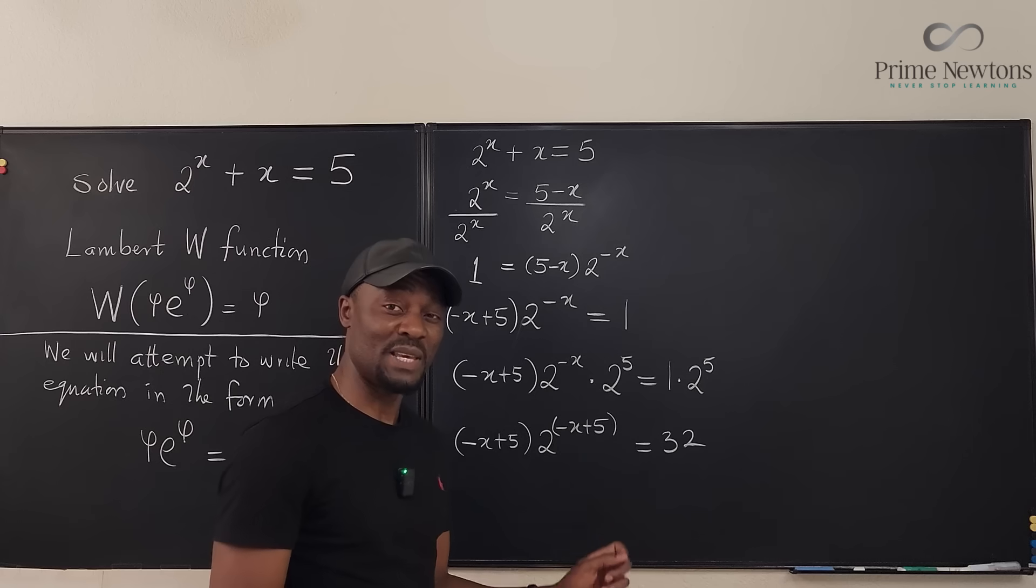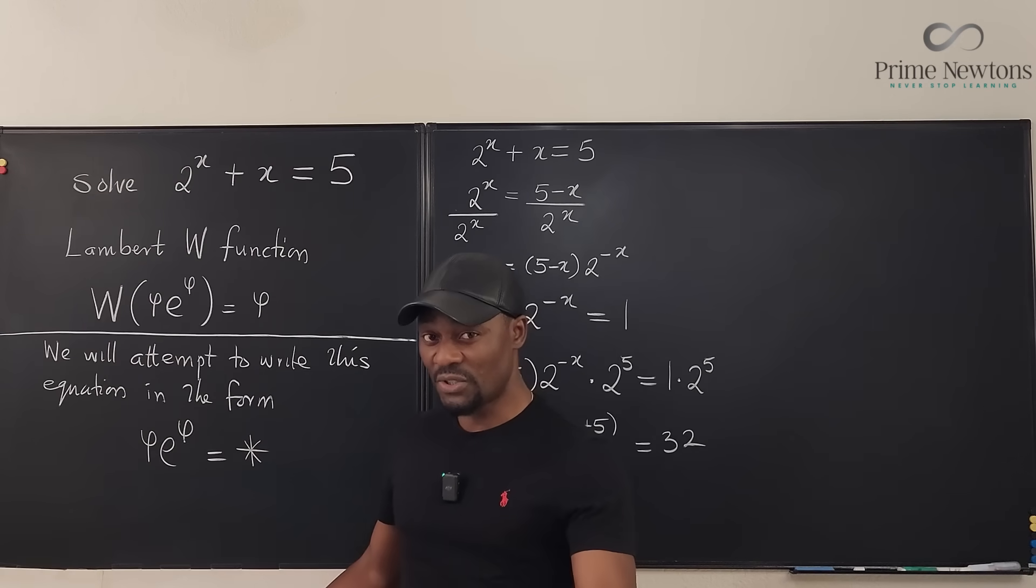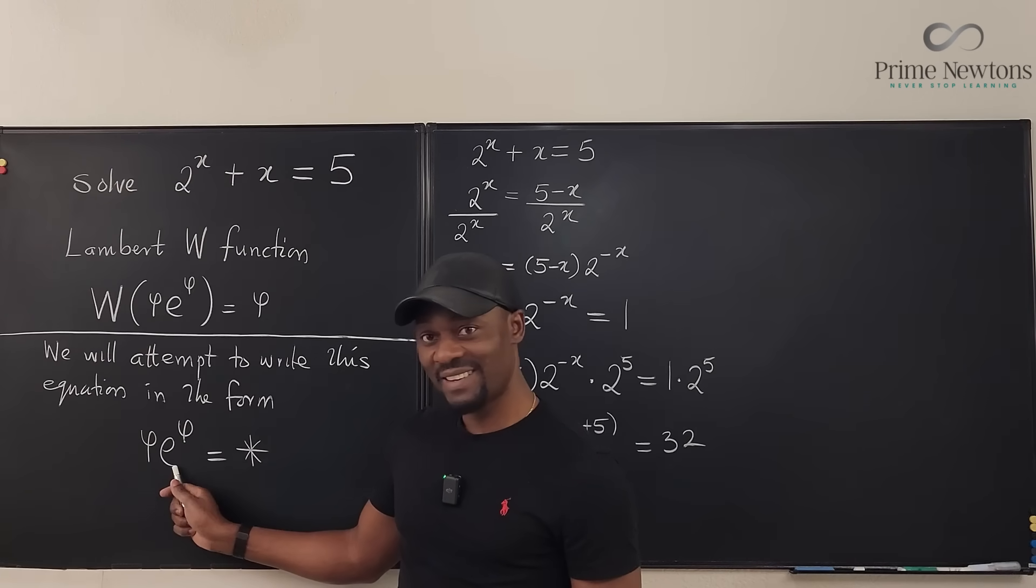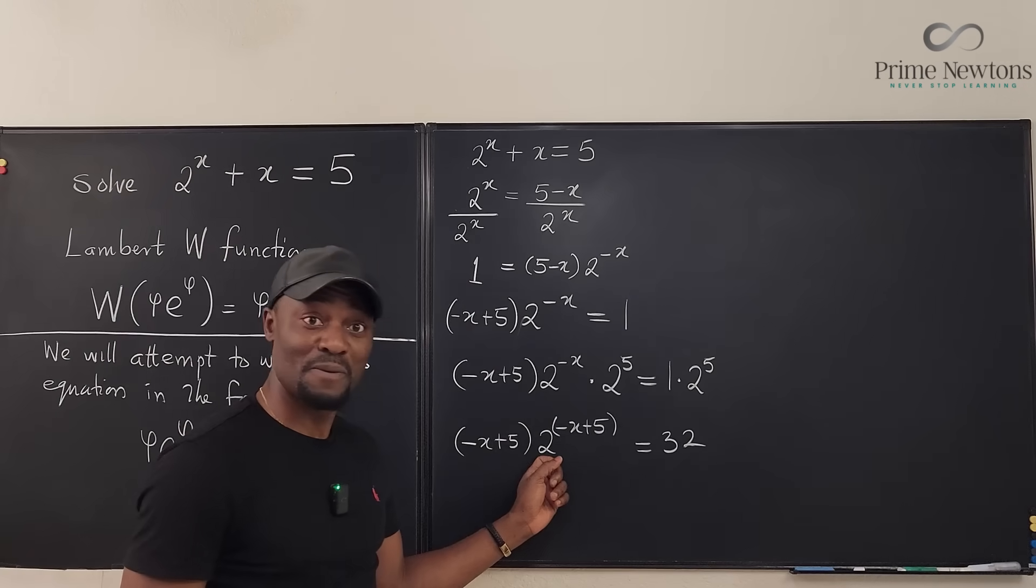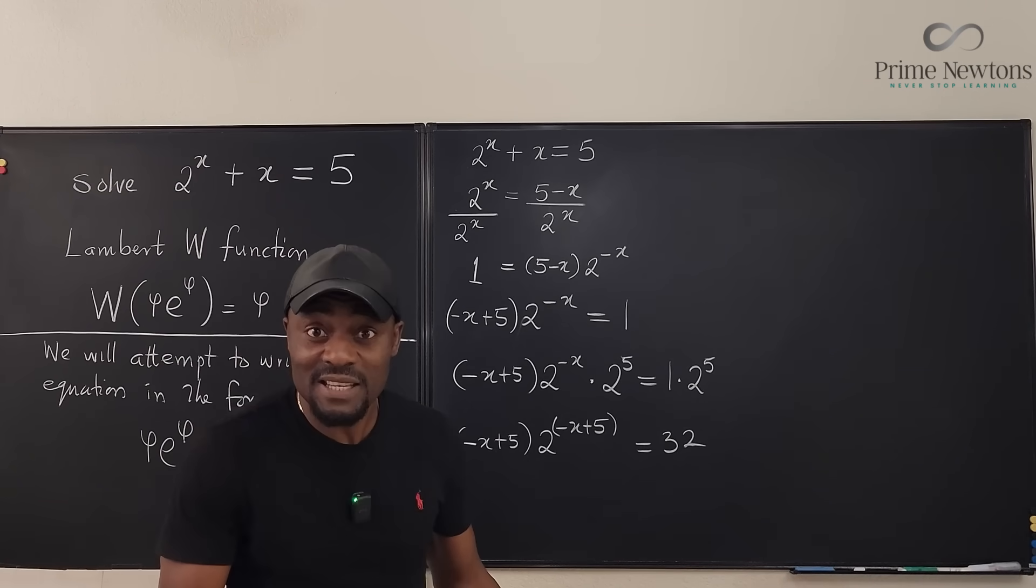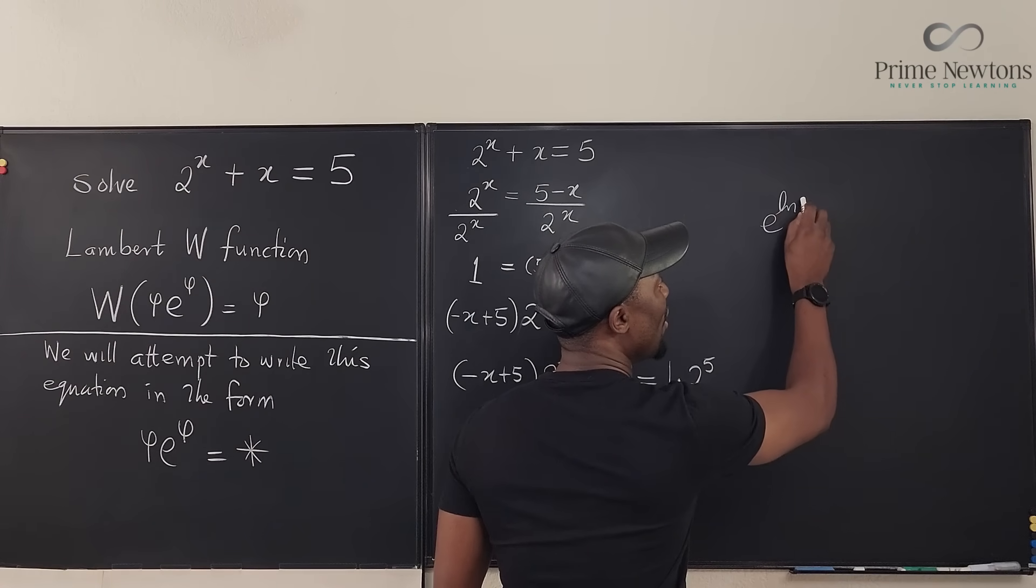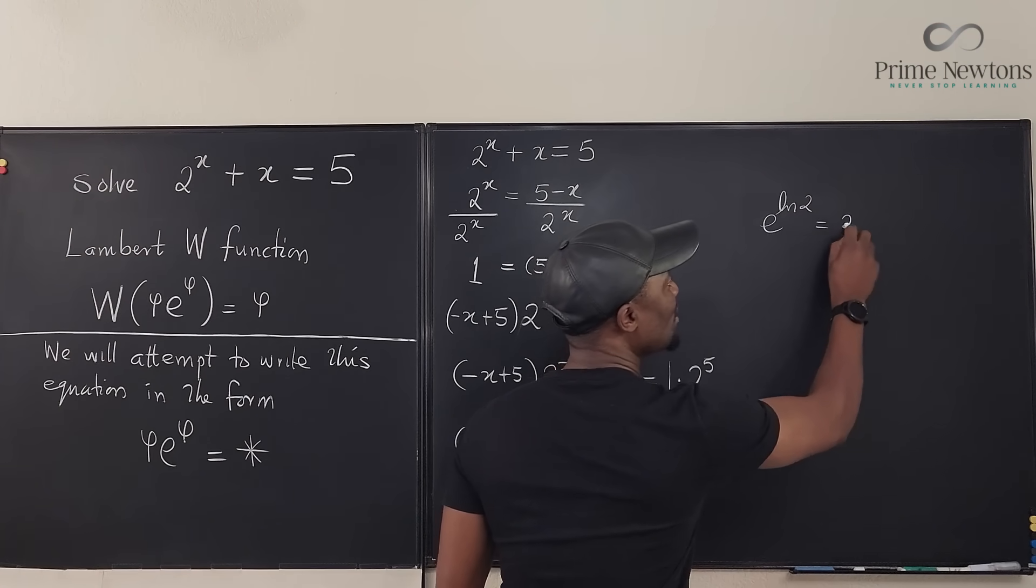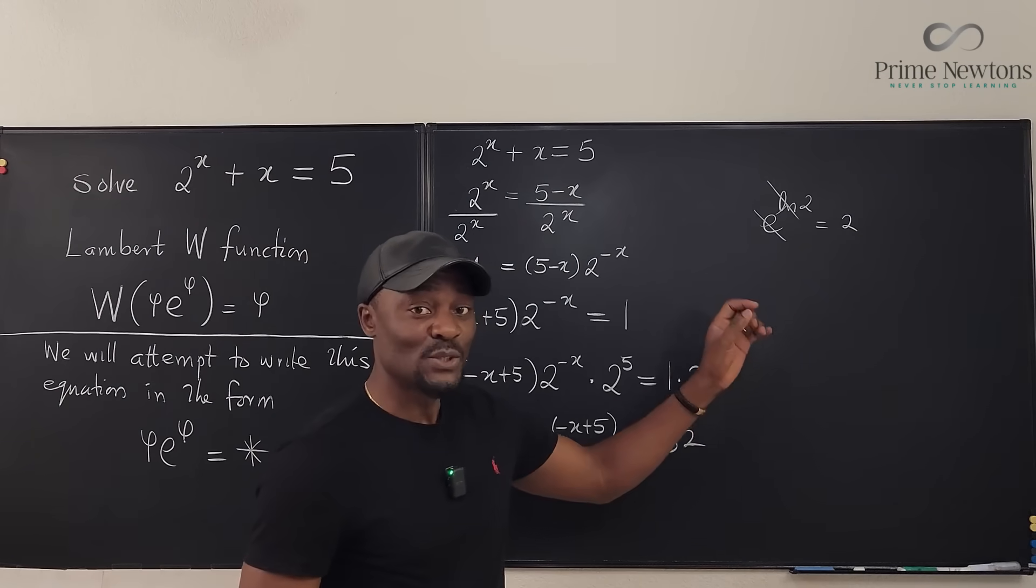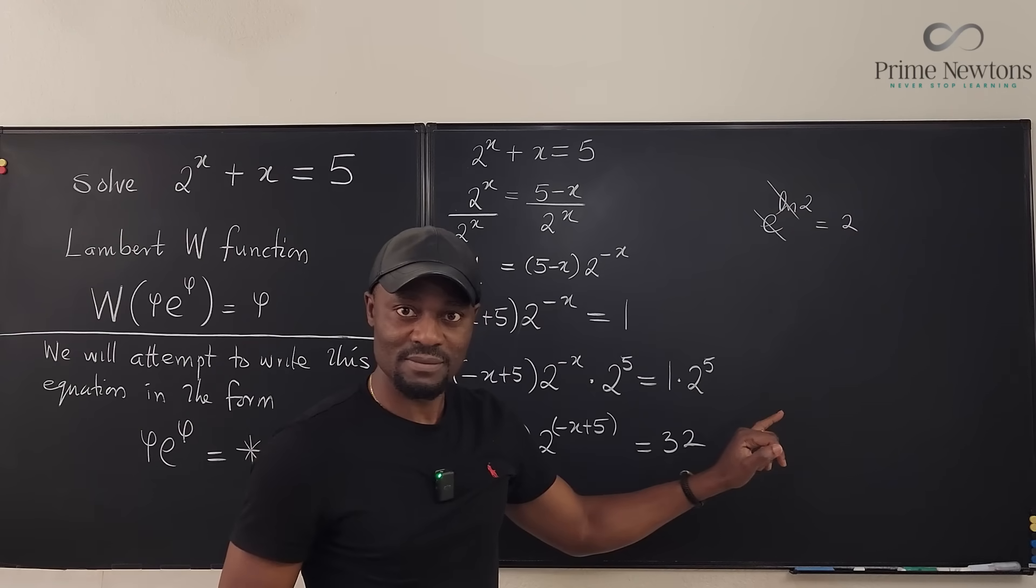Unfortunately, the W function only takes e. It does not take 2. So we have to rewrite this 2 in terms of e. And it's easy because we know that e^(ln 2) = 2, because this always takes this out. So we're going to replace 2 with all of this.